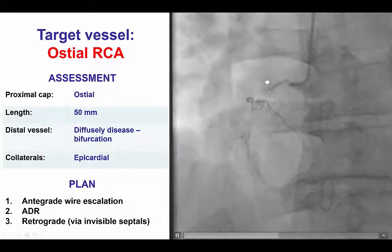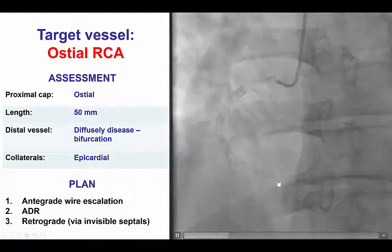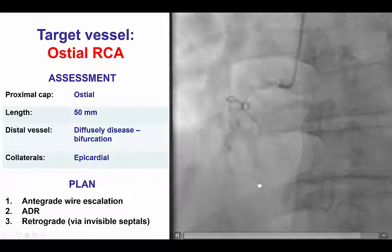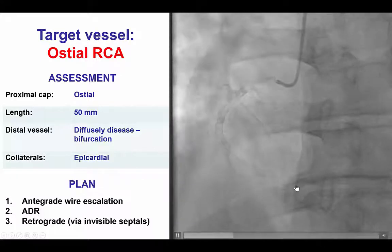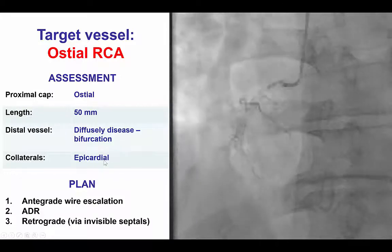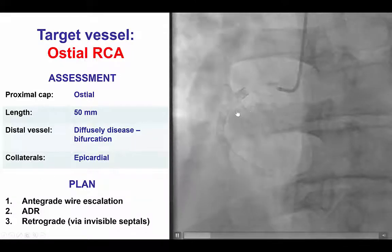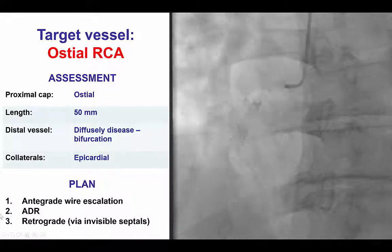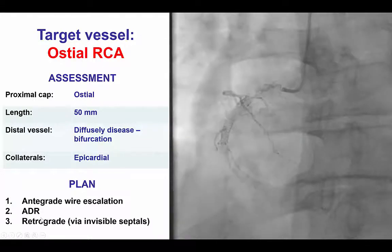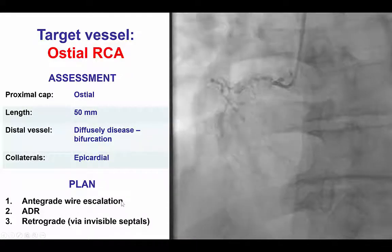We have an ostial right coronary CTO; the length was approximately 50 mm. The distal vessel was diffusely diseased, there was a stent in the distal part, and there was a bifurcation of the PDA and PLV close to the distal cap. The collaterals were epicardial and did not appear suitable for the retrograde approach. Therefore, our plan was to start with antegrade wiring, followed by antegrade subintimal reentry if the wire was subintimal, and then use retrograde as the last option if antegrade crossing attempts were not successful.